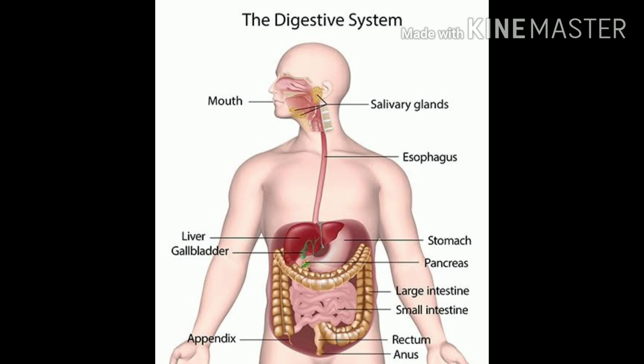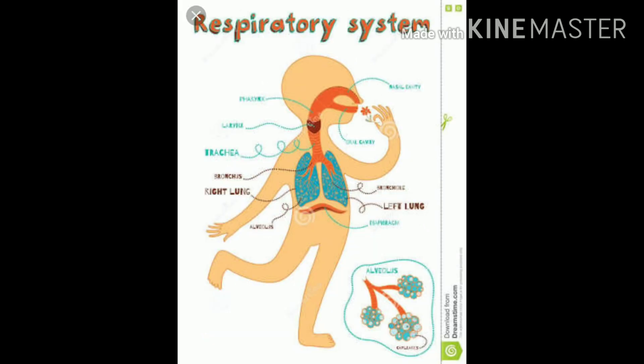What is digestion? It is converting the food into energy — that is called digestion — and this digestive system can be divided into two: one is digestive tract and the other is digestive glands. And today let's discuss about the respiratory system. Today's topic is respiratory system.